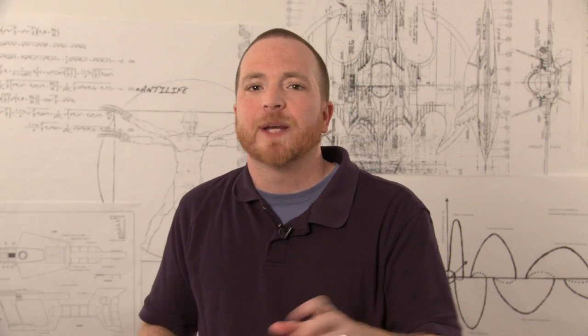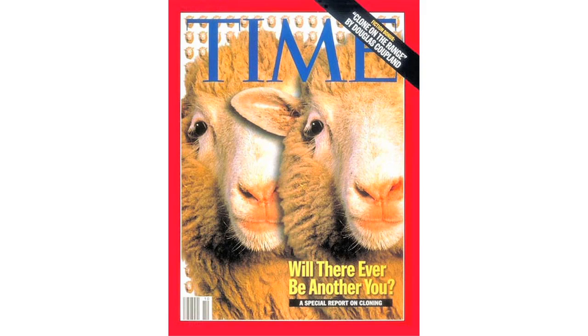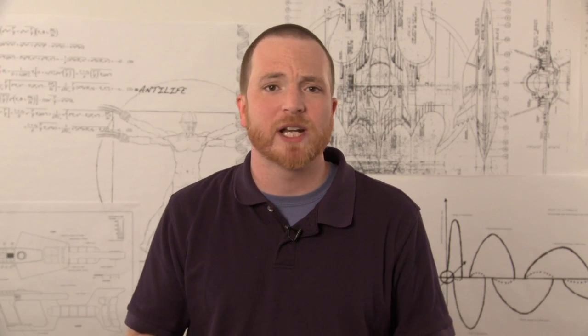In reproductive cloning, the blastocyst is implanted into a surrogate mother through in vitro fertilization and brought to term. We created our first mammalian clone in 1996 when Dolly the Sheep was born. Since then, we've cloned a whole number of mammals, including mice, cats, cattle, and horses. But the SCNT process is difficult and specific to each organism.